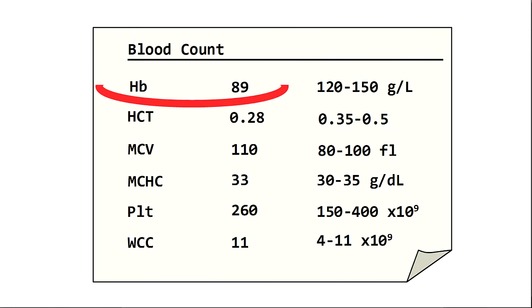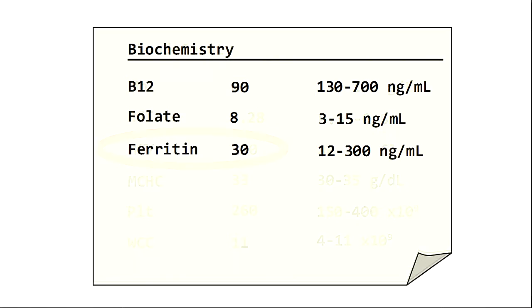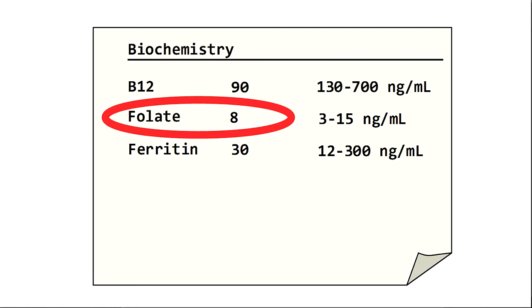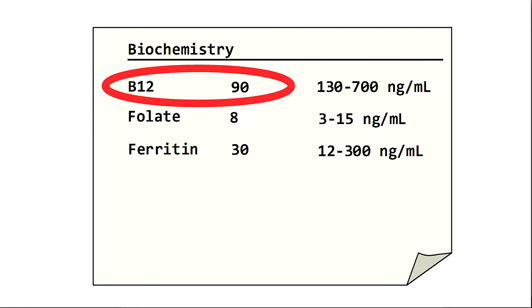You took some bloods and now have the results. The haemoglobin is 89, mean cell volume is 110, the folate is 8, and the B12 is 90.